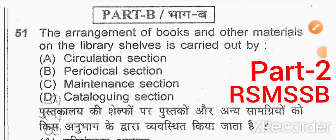The arrangement of books and other materials on the library shelves is carried out by — option C. The right answer is the maintenance section.